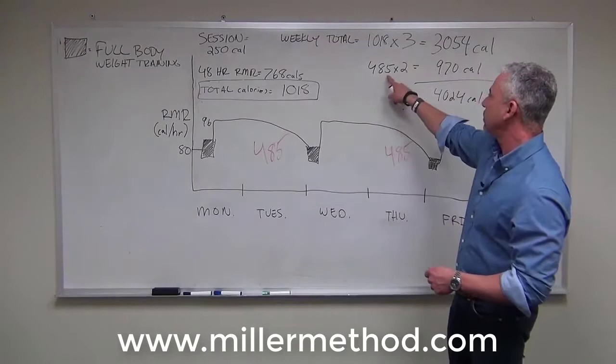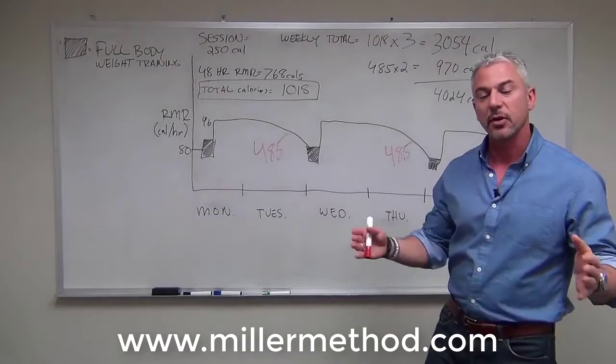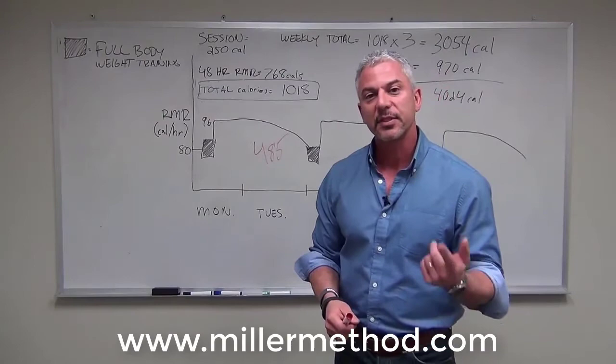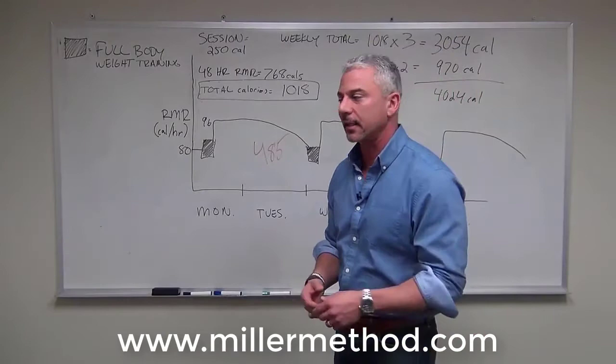These two workouts combined, 485 times 2, gives us 970 calories. If we add that to the 3,000 that we burn from the weight training, we end up with 4,024 calories as our total burn over the course of that week. And remember, 3,500 calories represents one pound of fat, so here we see that we have a significant elevation in caloric burn as a result of this type of training.